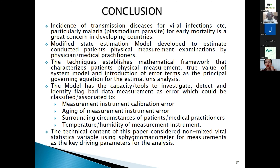In conclusion, the incidence of transmission cases for vital infections, particularly malaria plasmodium parasite, and early mortality is a great concern in the developing economy. The modified state estimation model was developed to estimate the conducted patient physical measurement examination by a physician or medical practitioner. The technique established a mathematical framework characterizing patients' physical measurements. The model has the capacity to investigate, detect, identify, and flag bad data measurement as error — classified as attributed to measurement instrument calibration error, aging of measurement instrument, surrounding circumstances of patients or medical practitioners, and temperature and humidity of the measurement instrument. The technical content considers vital statistic variables using the sphygmomanometer, thermometer, and other measurement instruments as key driving parameters.